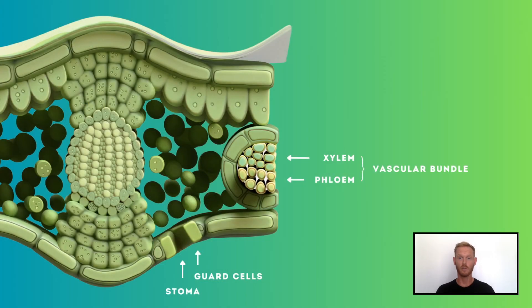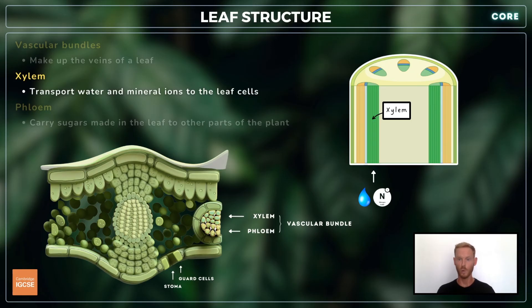The veins of the leaf are made of structures called vascular bundles, which consist of both xylem and phloem tissues. The interior xylem vessels transport water to the leaf for photosynthesis and mineral ions for the production of amino acids and chlorophyll, amongst other things.